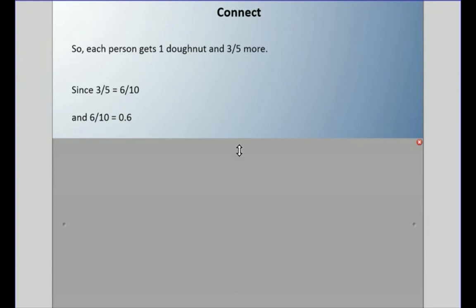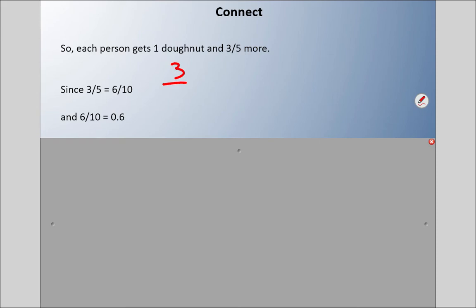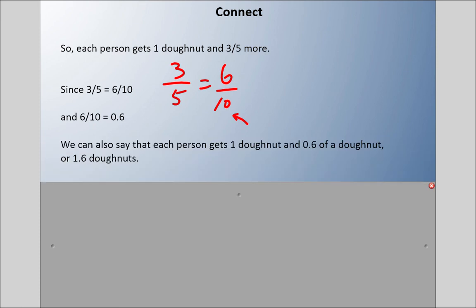Remember, we can do something with that fraction. Three-fifths equals six-tenths, and maybe you know where I'm going here - this tenth number. We could actually convert that over to a decimal. We could say six-tenths, so now each person gets one donut and six-tenths of a donut, or 1.6 as a decimal.